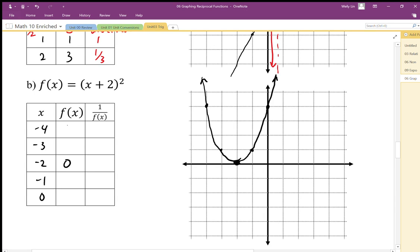Negative 4, 4, 1, 1, and 4. So the key point, again, is going to be our 0 point, because that's going to give us an undefined value. And that's going to generate our vertical asymptote.